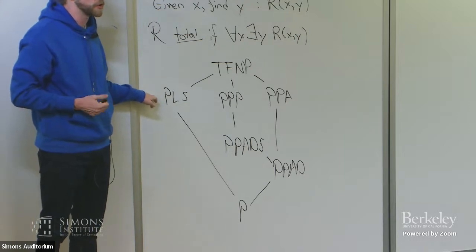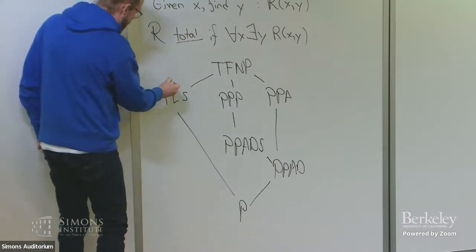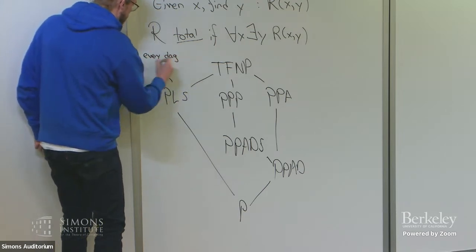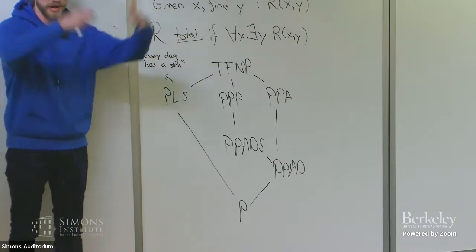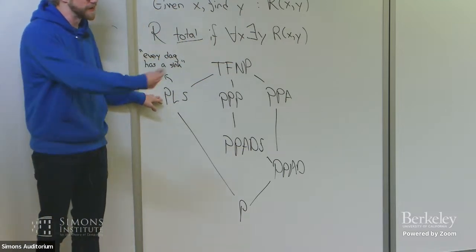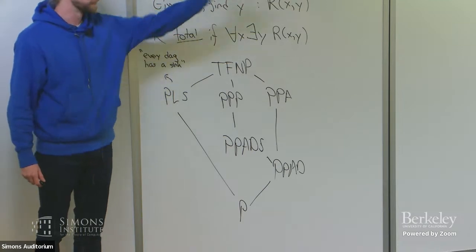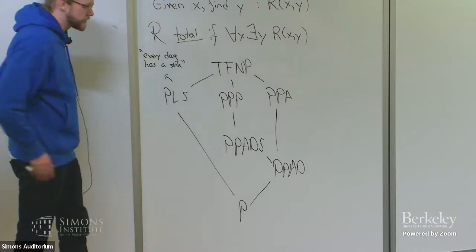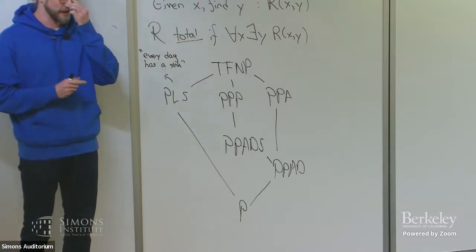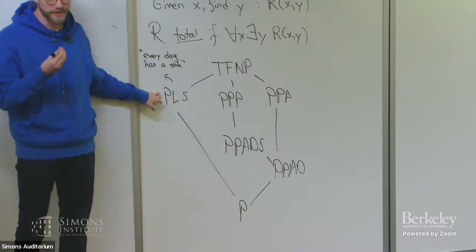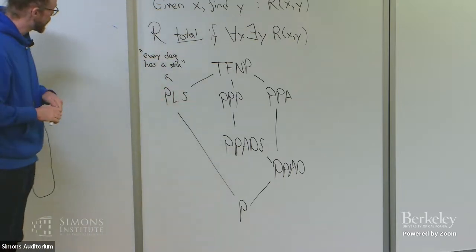So just like in classical complexity theory, we can define a bunch of subclasses here. This is TFNP. In this original paper where TFNP was introduced, there were a bunch of classes introduced—these sort of classical TFNP classes. And they all correspond to nice simple total search problems. So let me just write a few of these down. And what's nice about these subclasses is that each of them corresponds to like a theorem, actually—usually a theorem that involves a proof of existence. So for instance, the class PLS you can think of as corresponding to the theorem that every DAG has a sink.